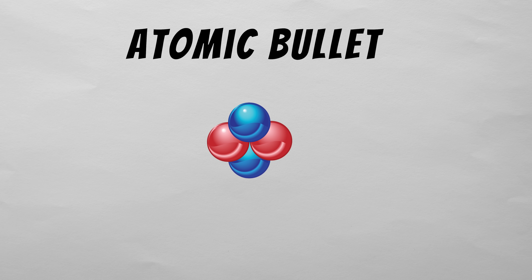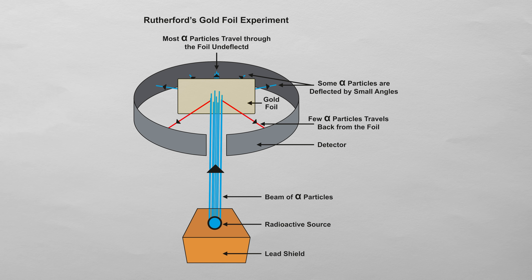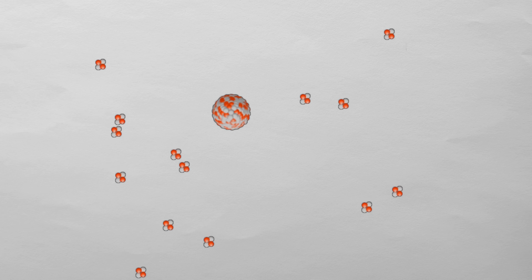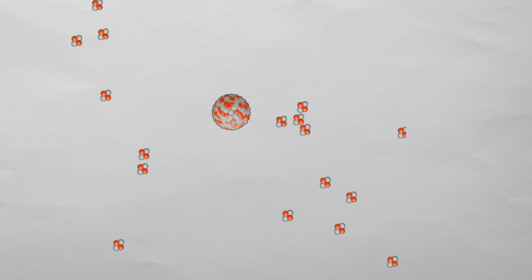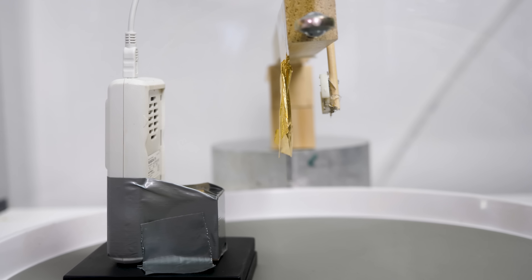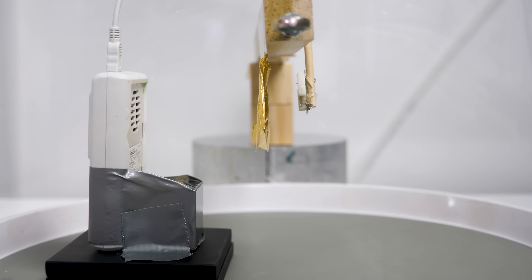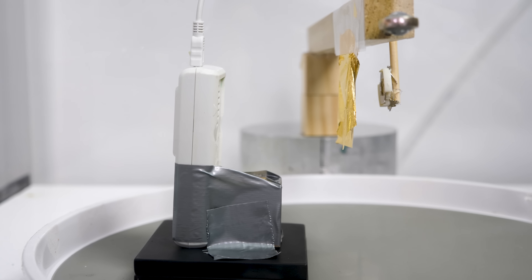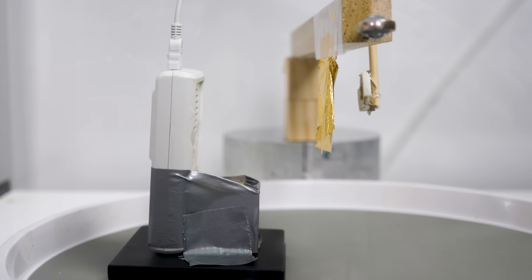In 1909, Ernest Rutherford fired atomic bullets at gold foil and made one of the biggest discoveries in physics, proving that atoms have a dense, tiny nucleus, and outside of that, they're almost completely empty space. Last month, I made a video recreating Rutherford's famous gold foil experiment. I used my vacuum chamber, some gold foil, an Americium-241 source for my alpha particles, and an alpha particle detector.